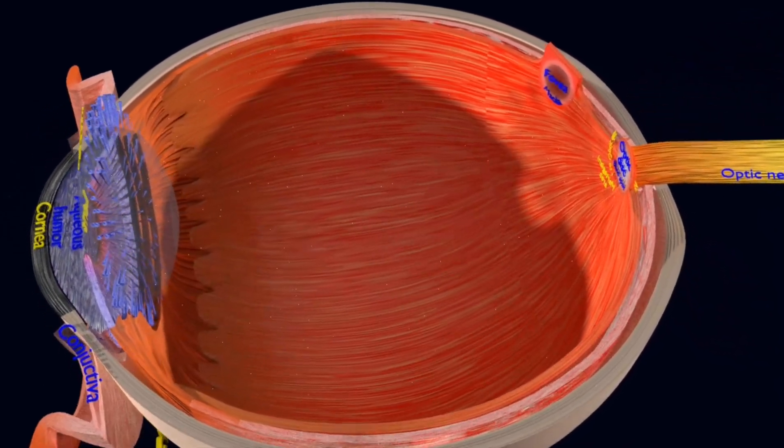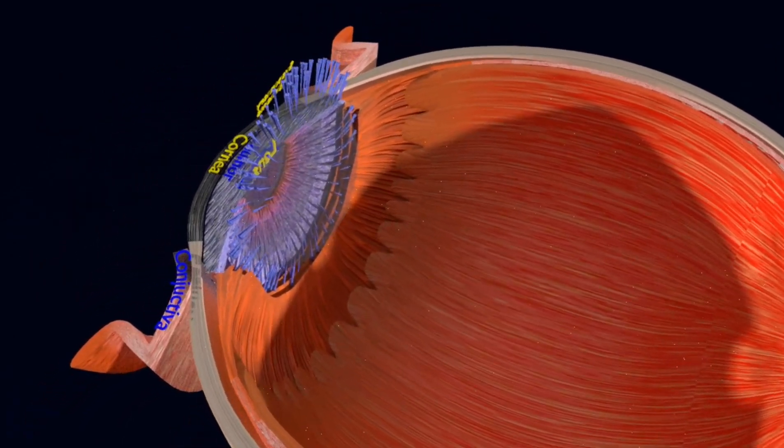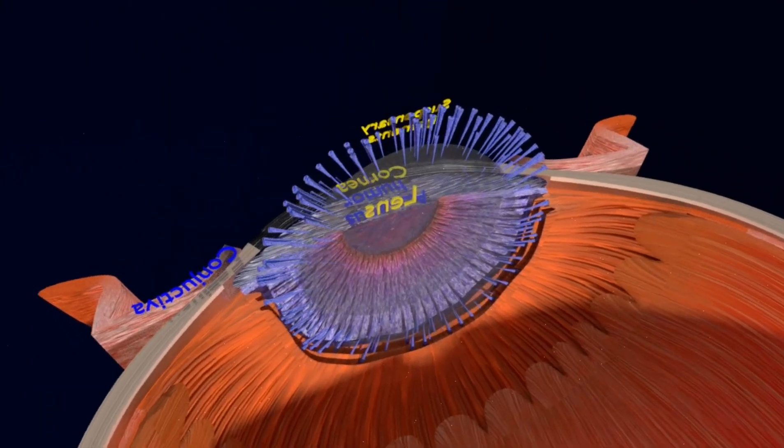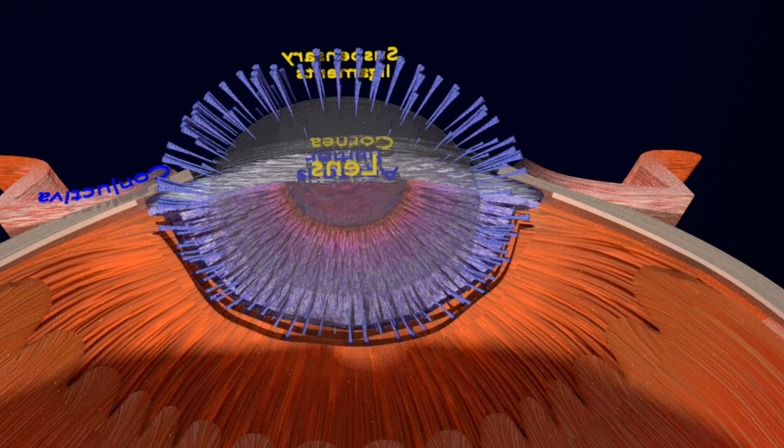The lens works together with the cornea to focus light correctly on the retina. When this light hits the retina, special cells called photoreceptors turn the light into electrical signals.